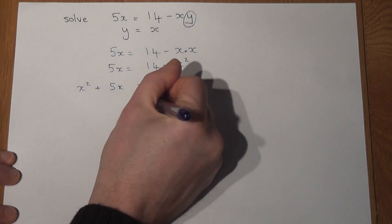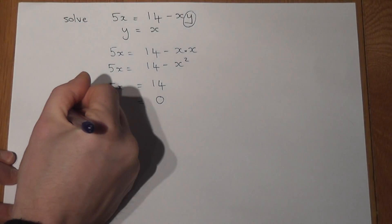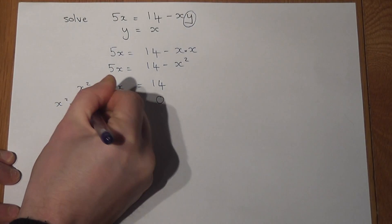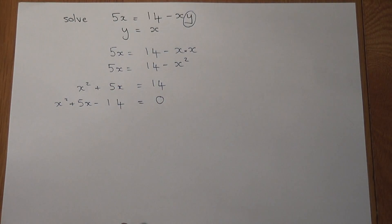And I want a 0 so if I take away 14 I get x squared plus 5x take away 14 equals 0.